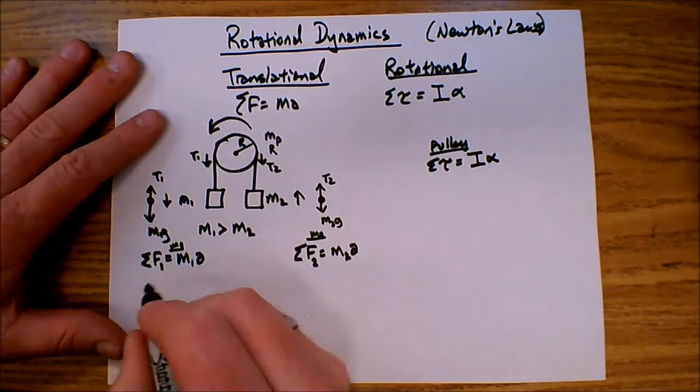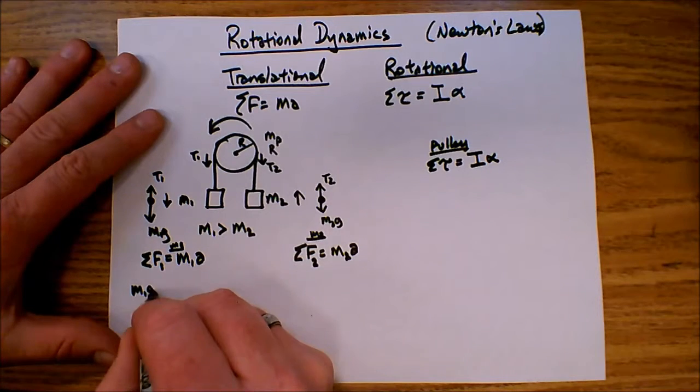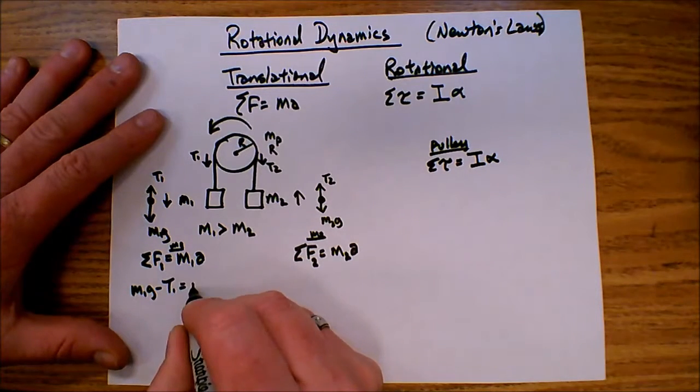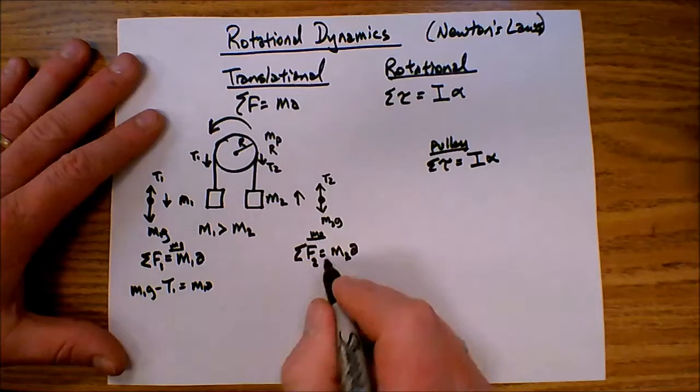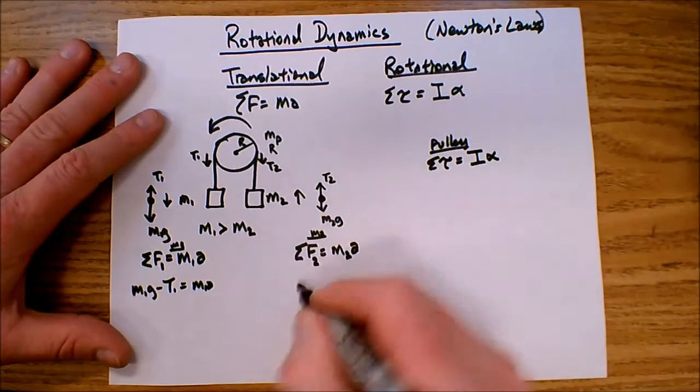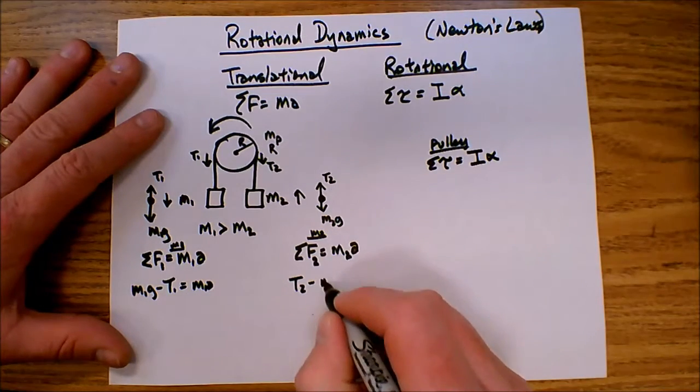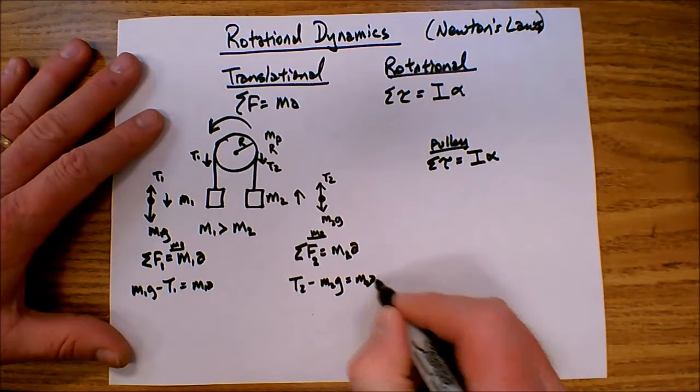So on object one, it's accelerating down, so the net force will be M1G minus T1, that's going to equal M1A. On object two, it's accelerating up, so it's going to be T2 minus M2G equals M2A.